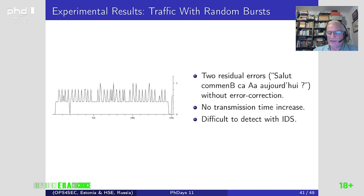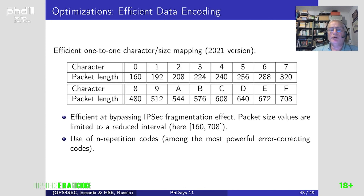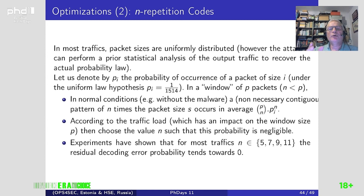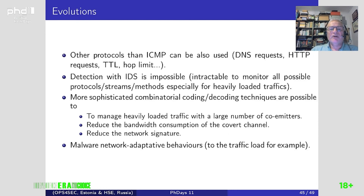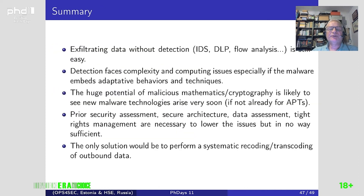There are possibly other optimizations, which would need more elaborate mapping. You can use more sophisticated data synchronization or tagging techniques. There is also another version with a better one-to-one character-to-size mapping. If you are interested in the mathematical description and proof of efficient encoding, all references are provided. There are also other evolutions that I will let you read.